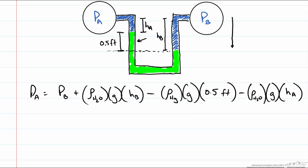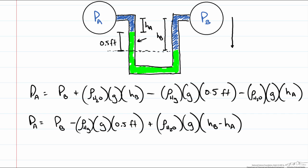So we have two terms with the density of water in them let me combine these and what you should notice is that the difference in height HB minus HA is just that 0.5 feet. So now we can rewrite this in the form we are looking for the difference between PA and PB and we get the following equation.